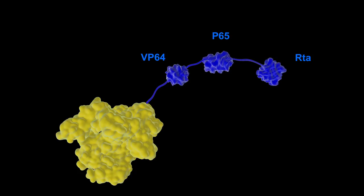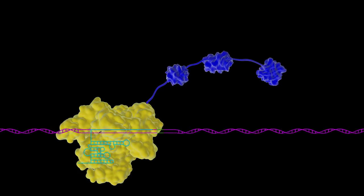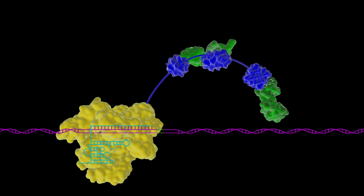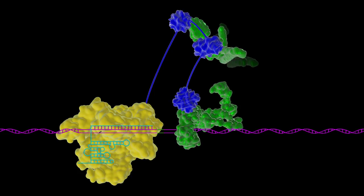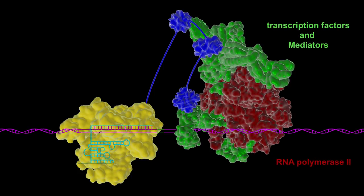In doing so, we were able to find one particular combination, which we termed VPR or VIPER, that showed a drastic improvement in its ability to activate gene expression compared to first-generation activators, achieving up to a 300-fold improvement in activity.